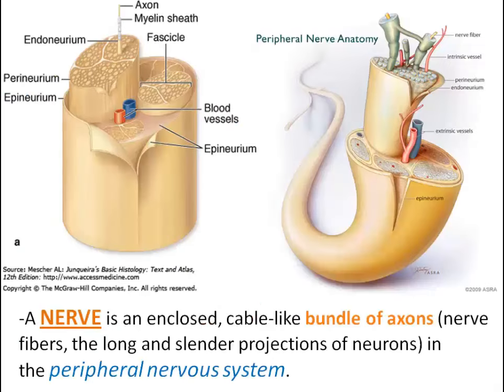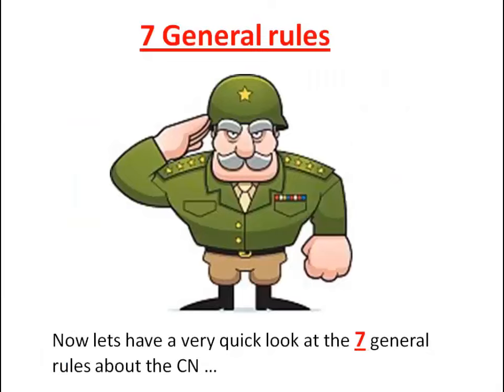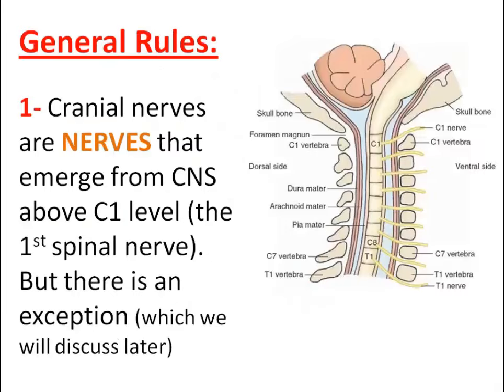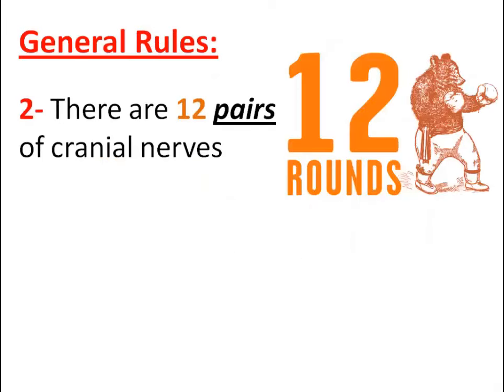What is a nerve? A nerve is an enclosed, cable-like bundle of axons in the peripheral nervous system. Now let's have a very quick look at the seven general rules about the cranial nerves. One: cranial nerves are nerves that emerge from the CNS above C1 level, the first spinal nerve, but there's an exception too.